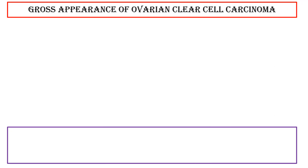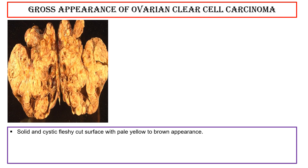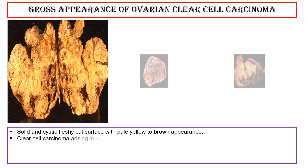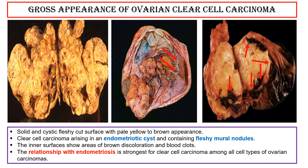Gross appearance: clear cell carcinoma shows a solid and cystic fleshy cut surface with pale yellow to brown appearance. Clear cell carcinoma arising in an endometriotic cyst contains fleshy mural nodules; the inner surfaces show areas of brown discoloration and blood clots. The relationship with endometriosis is strongest for clear cell carcinoma among all cell types of ovarian carcinomas.